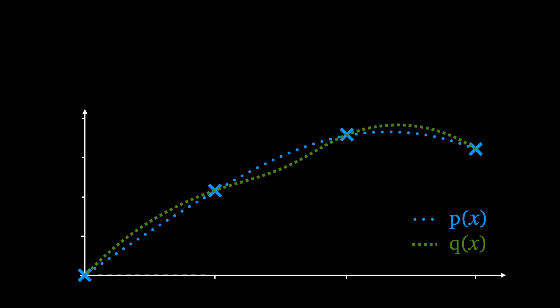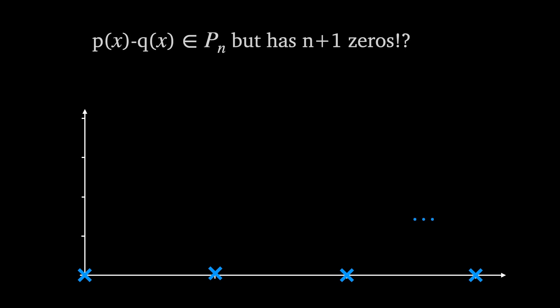Because both p and q interpolate the nodes we know they must be equal in at least n plus 1 places. By subtracting q from p this gives a function that is zero in n plus 1 places, but since p and q are in p sub n then p minus q is also in p sub n so it shouldn't have n plus 1 zeros. From our key fact we have to conclude that p minus q is zero and so p is equal to q.